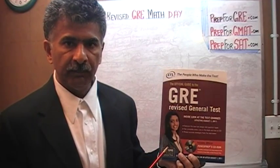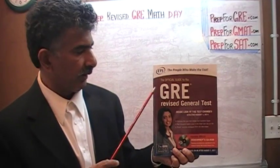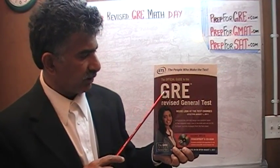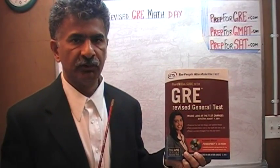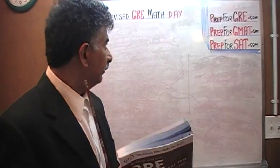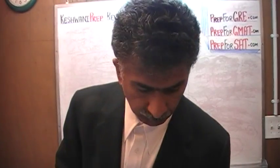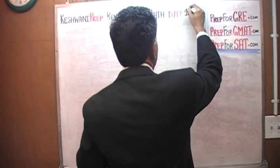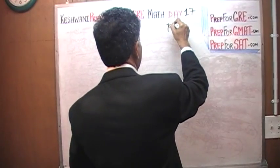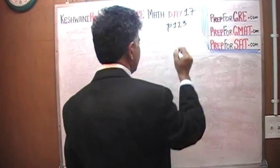We have been solving math problems out of this book, The Official Guide to the GRE Revised General Test. If you do not own this book already, purchase one immediately. The problem I am about to solve is on page 123. Today is lesson number 17, page 123.